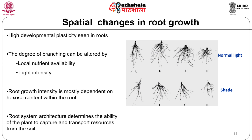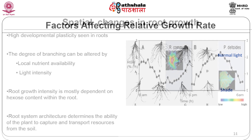Root systems have high developmental plasticity controlled by intrinsic and response pathways. For example, the degree of branching can change in response to local nutrient availability and determines the ability of the plant to capture and transport resources from the soil. Let us now consider some of the factors affecting the relative growth rate of a plant.